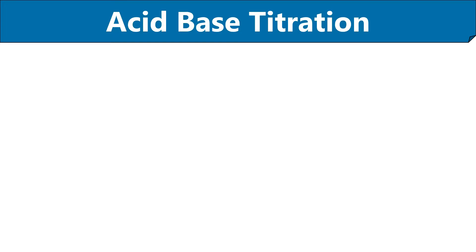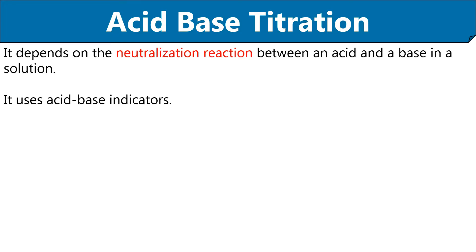Now let us discuss the meaning and theory of the acid-base titration. Acid-base titration depends upon the neutralization reaction between an acid and a base in a solution, so it is also called neutralization titration. Like titration, we can measure the unknown concentration of an acid or base solution by the known concentration of the standard acid or base solution. So it must be clear to us that acid and base are the two reactants in the acid-base titration.